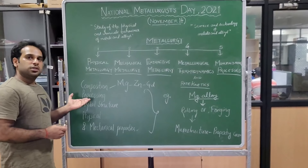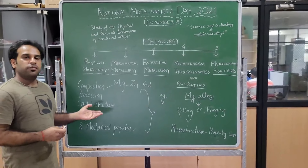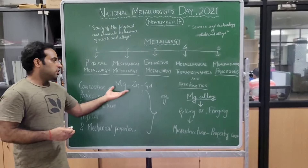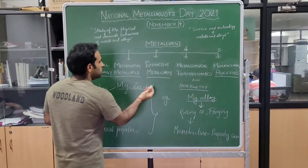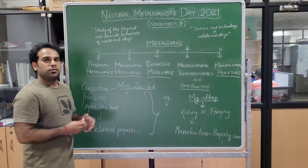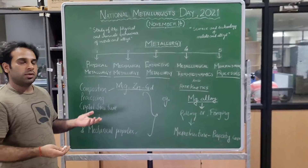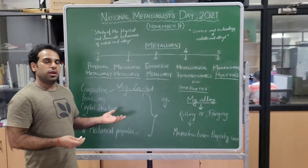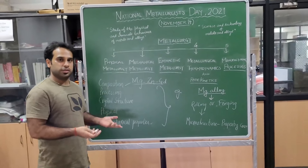The second thing is processing. Processing is like we will process any alloy — for example the magnesium alloy — by any of the thermomechanical routes like rolling, forging, or swaging.